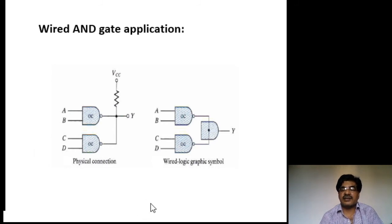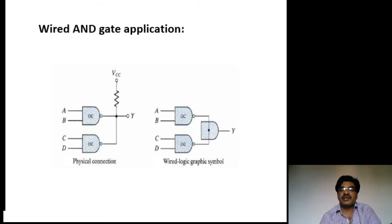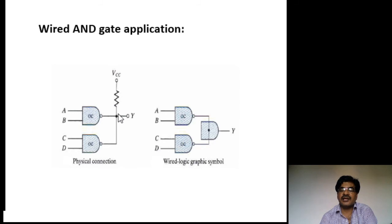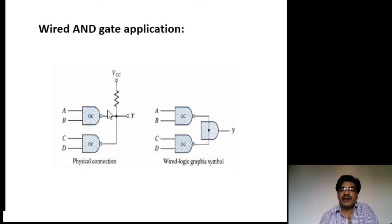Let us see the wired-AND gate application. Without an actual gate, the junction point acts as an AND gate. If you tie the outputs of open collector gates together at a junction point, that junction point acts as an AND gate. Here two NAND gates in open collector mode are used and both their outputs are tied together.